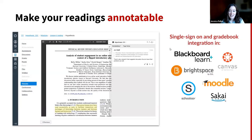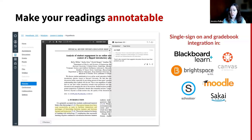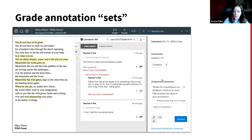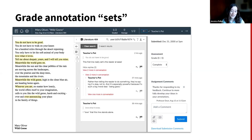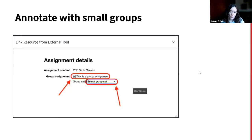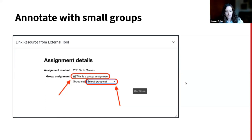A few notes about Hypothesis: we work with most major LMSs. Students don't have to create a Hypothesis account — they're brought seamlessly through via our LTI integration. We work with Canvas, Blackboard, D2L Brightspace, Moodle, Schoology, and Sakai. You can also grade annotation sets in your LMS, easily filtering each student's annotations to give grades and feedback. And if you use Canvas, Blackboard, or D2L Brightspace, you can split students into small groups for annotation, which can help student voices shine in your class.